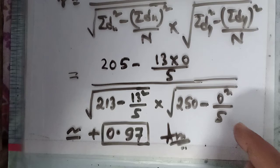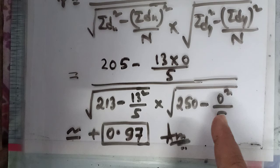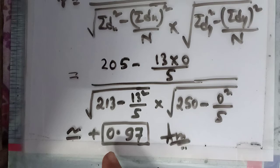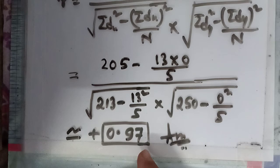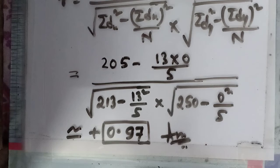Whatever value will come in other sums, you have to put it here. Calculate it by calculator, you will get the answer as 0.968, which is approximated as 0.97. Write up to two decimals, that will be enough. This is the way how we find Karl Pearson's correlation coefficient by the shortcut method.